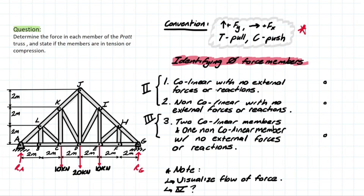Let's imagine we have a joint with two members that are collinear — meaning they are parallel and act on the same line of action. The first rule is: we have zero force members if the members are collinear with no external forces or reactions. If there's no external force applied at this joint, both members will be zero because to keep the joint in equilibrium, if there were a compressive force in one member, the other would have to act opposite to counteract it. With no force in either member and no external force applied, both members are zero.